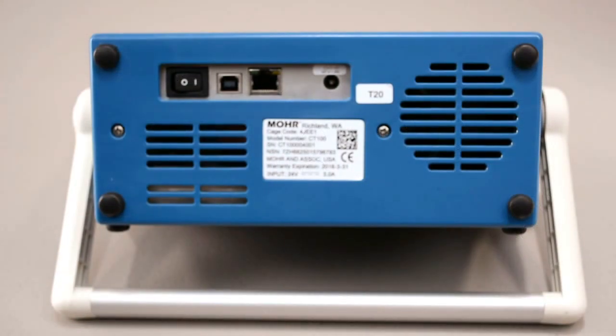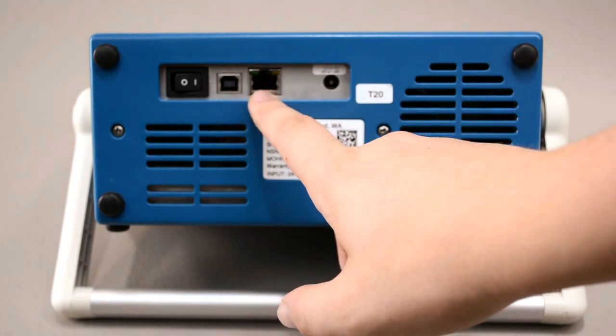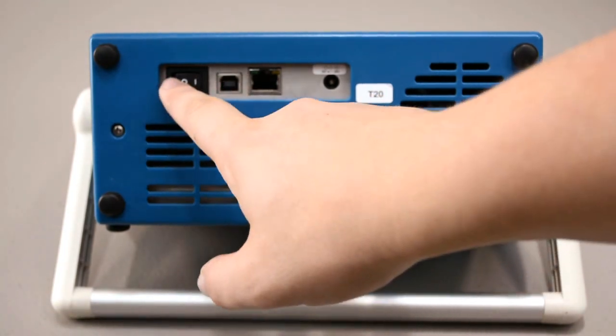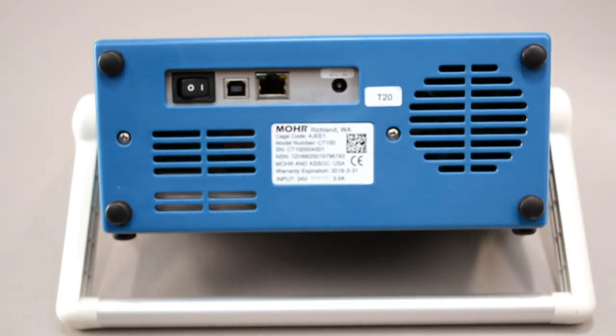Here's the back of the CT100. You can see you have your DC power input, your Ethernet cable, your USB port, and your power switch. That's the off position, that's the on position.